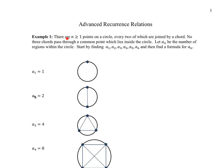So this one says there are n points on a circle, every two of which are joined by a line or a chord, and no three chords pass through a common point. So if two lines intersect, another line doesn't come through that same intersection point. So we're going to let a_n be the number of regions within the circle. And we'll start by just finding a_1, a_2, a_3, a_4, a_5, and a_6, and then we'll try to find a formula that gives us a_n in general.